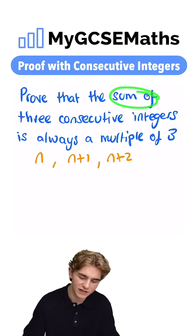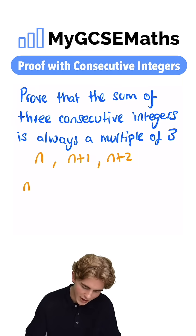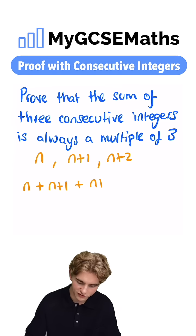Now, to show that the sum of these is a multiple of three, what can we do? Well, we're going to add them all together. So we're going to do n plus n plus one plus n plus two.